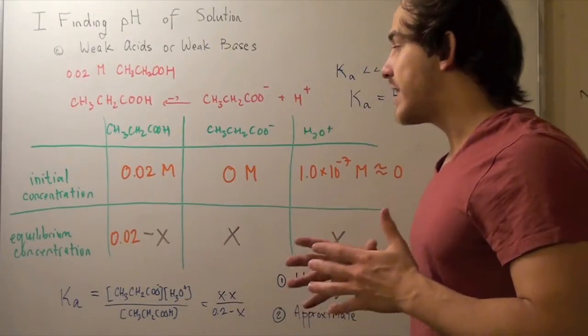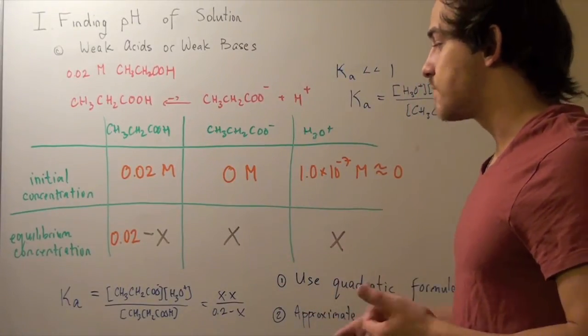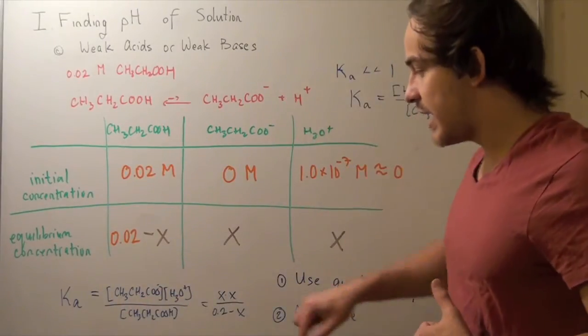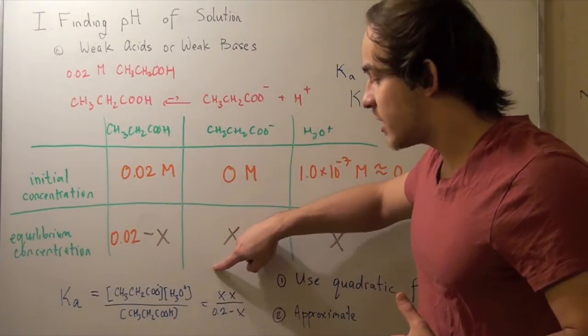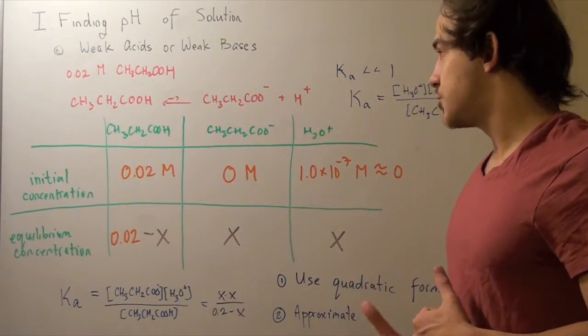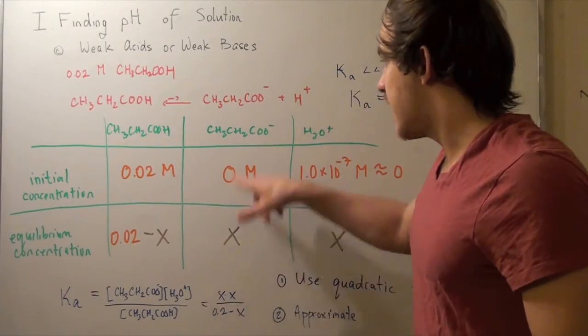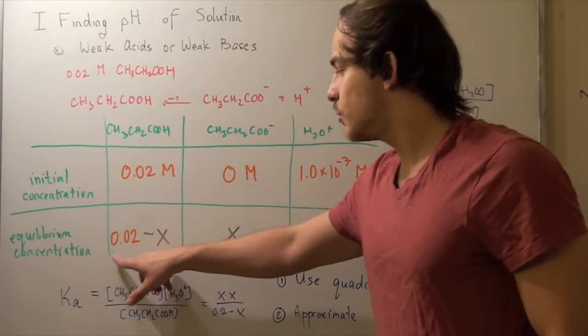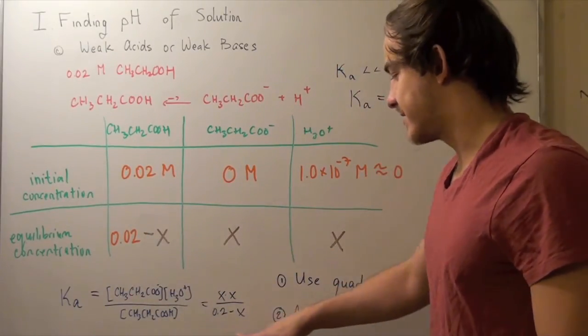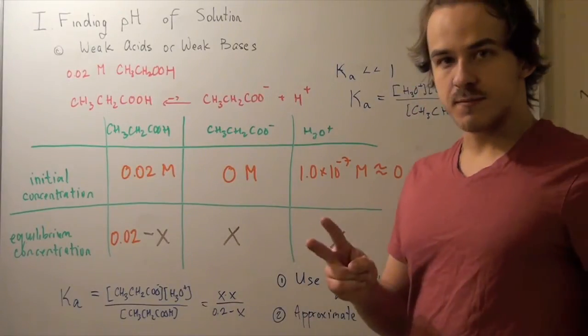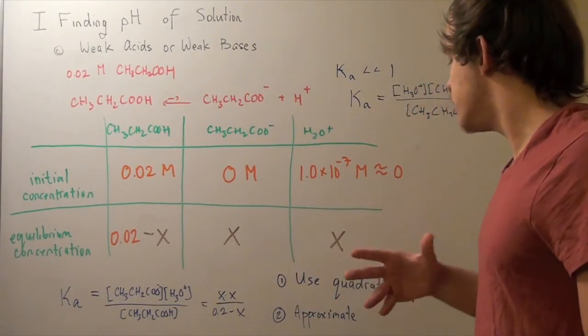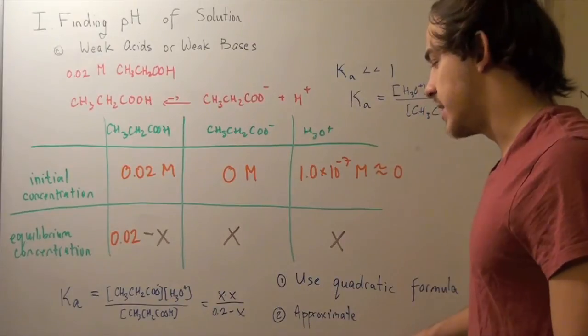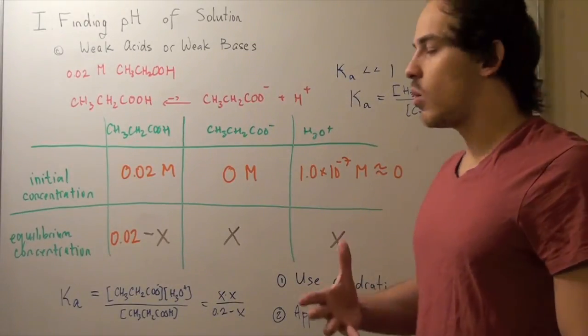So now let's write our expression, equilibrium expression for Ka. So suppose we're given some Ka, so we know the Ka. What we need to find is the concentration of this guy. Using that concentration of this guy, we can find the pH. So this is x and this is x. So we rewrite these guys as simply x times x and the bottom is 0.02 minus x. So now we can solve it two ways. The long way and the tedious way is using quadratic formulas. And I'll show you that in a second. The second way is to approximate. So let's compare these two methods and see which one is better.